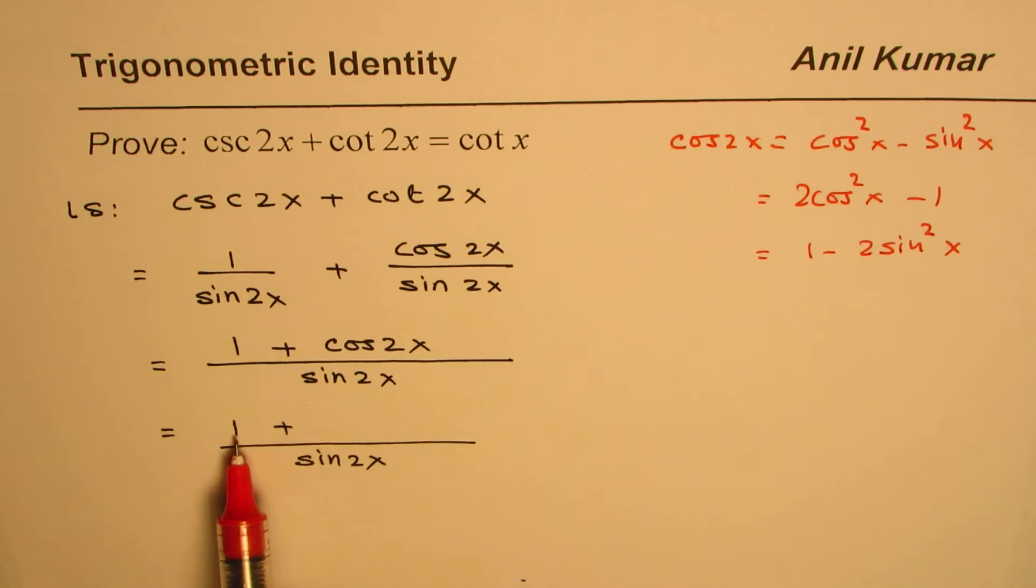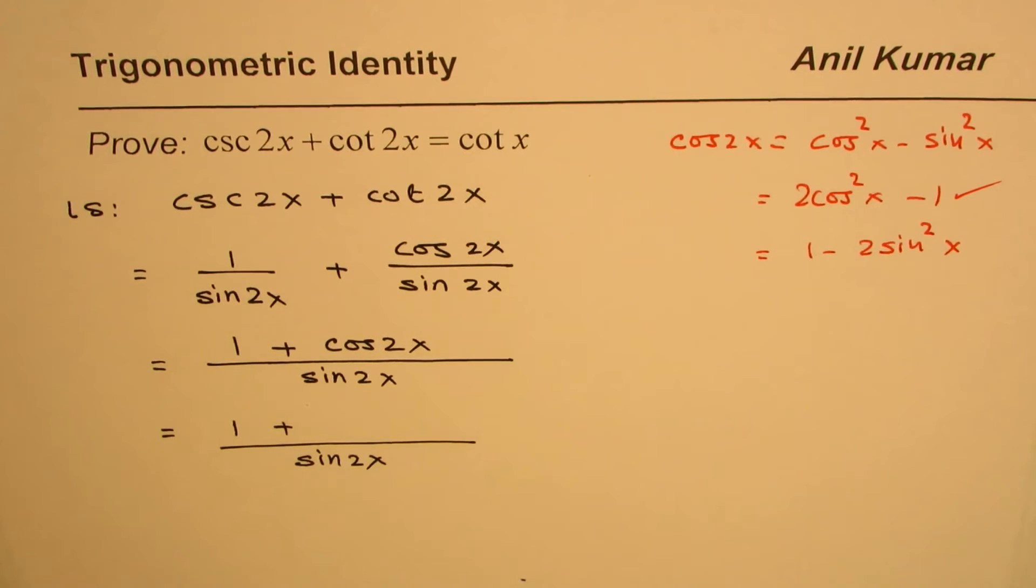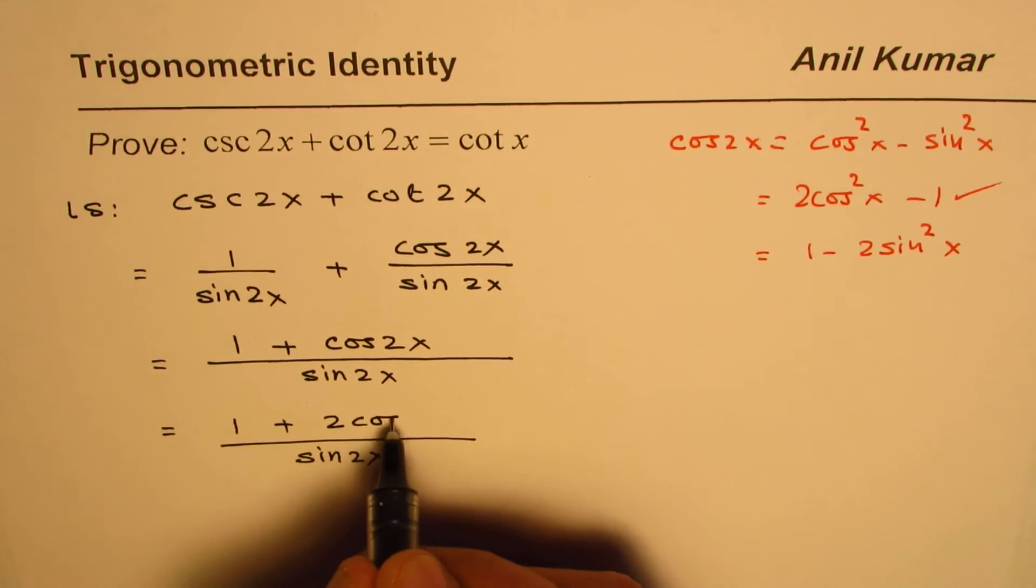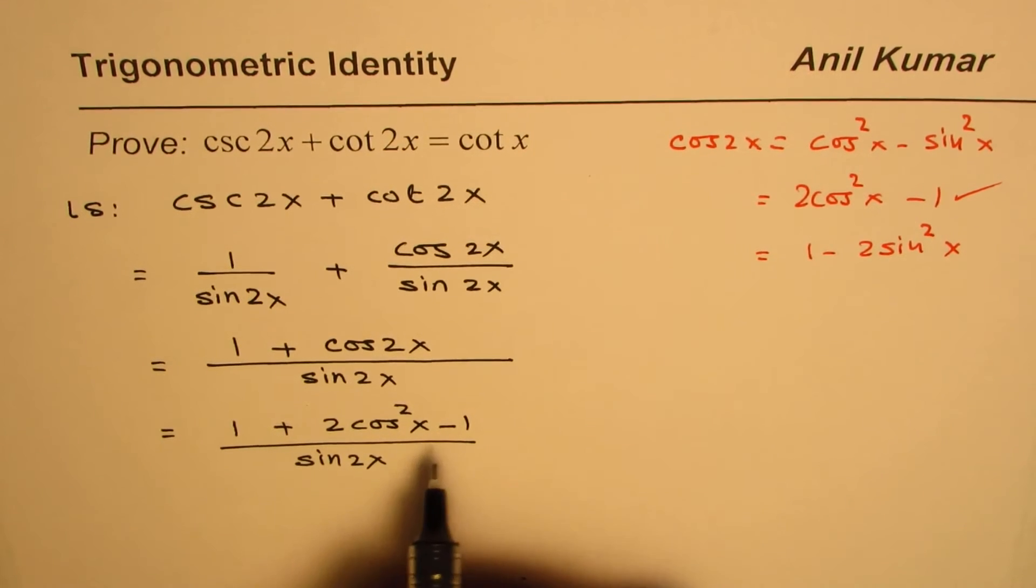Since we have 1 here, we'd like to cancel that out, and so the option is the second one. So we'll replace cosine 2x with 2 cosine squared x minus 1. Do you get an idea? So that is what we are going to do.